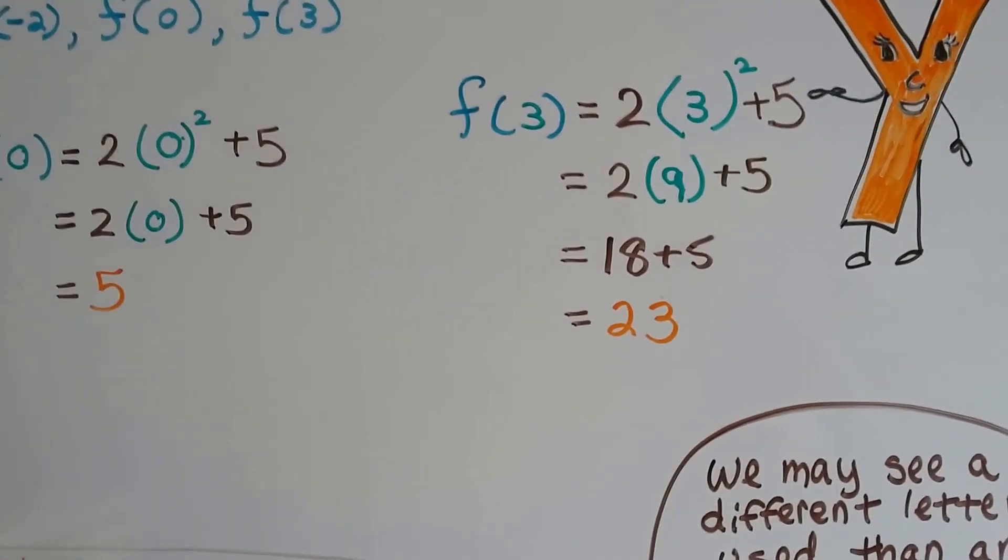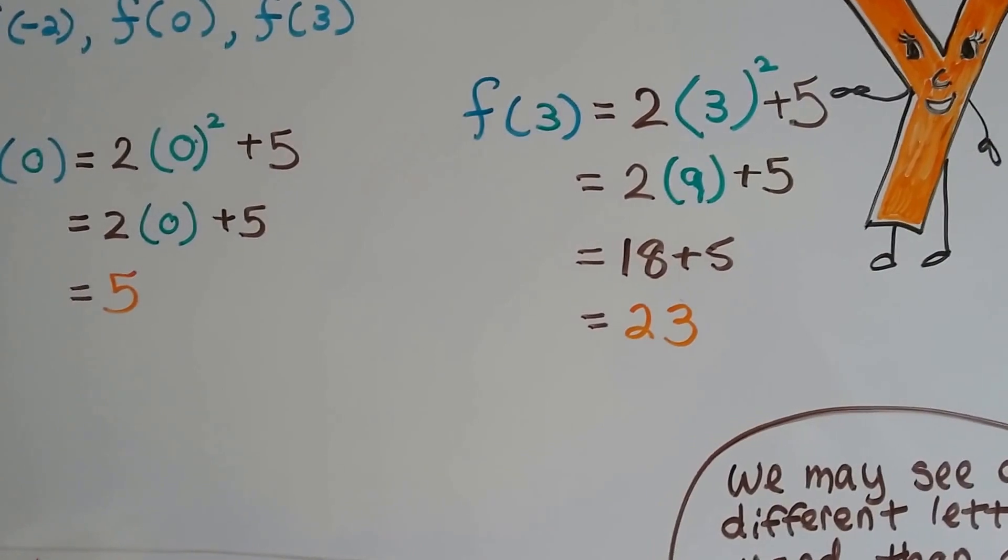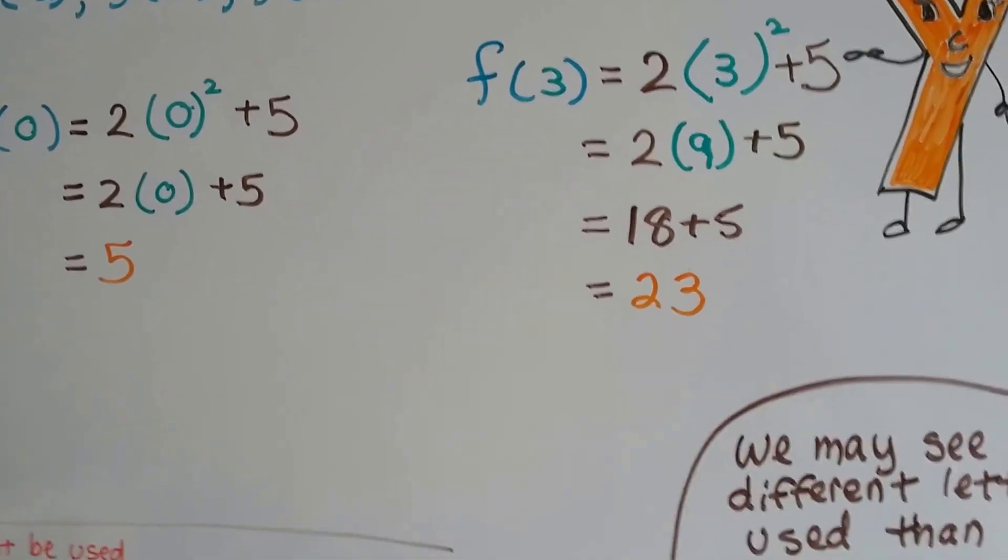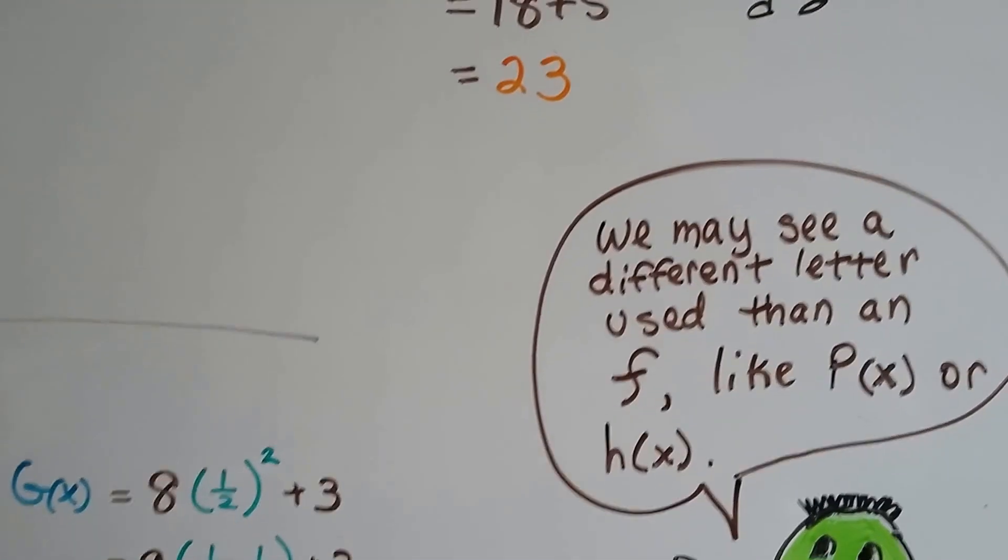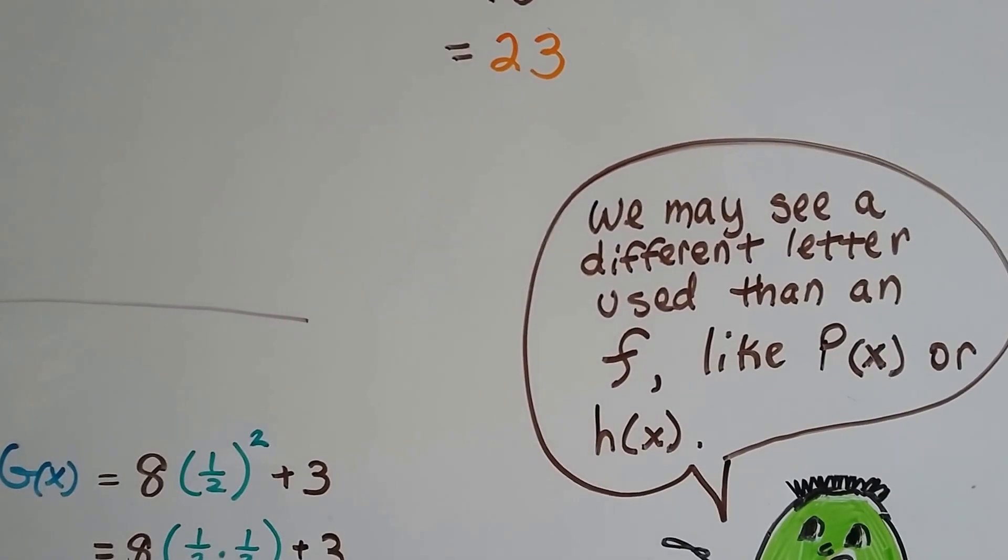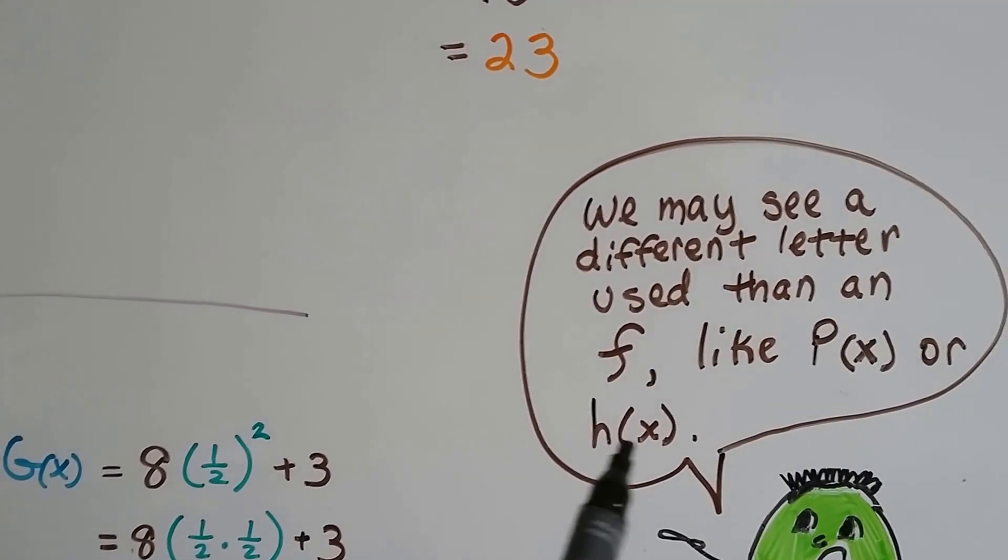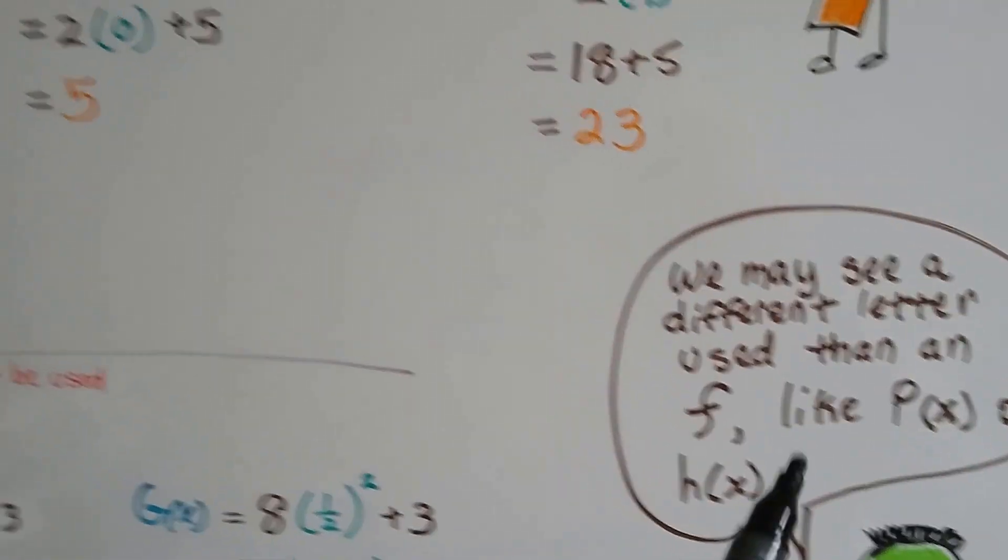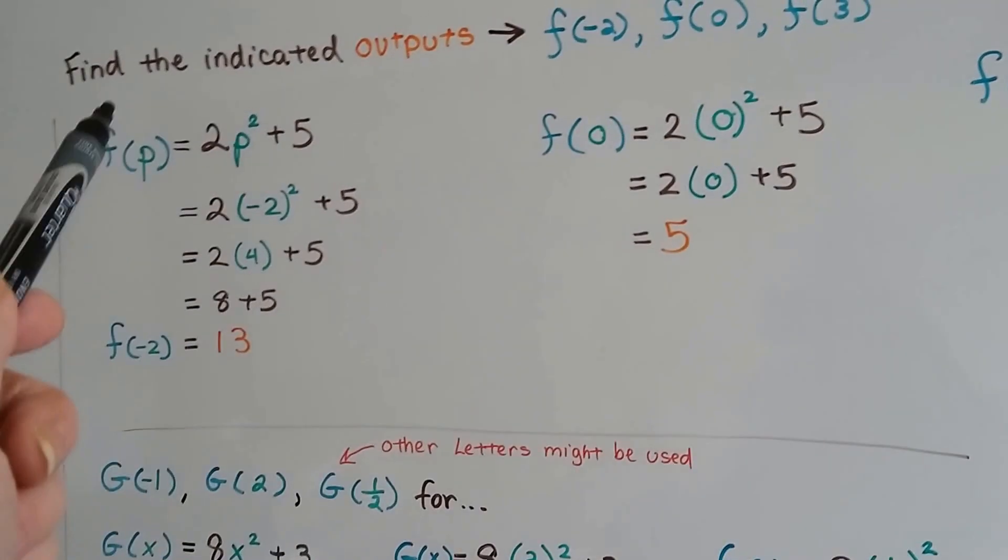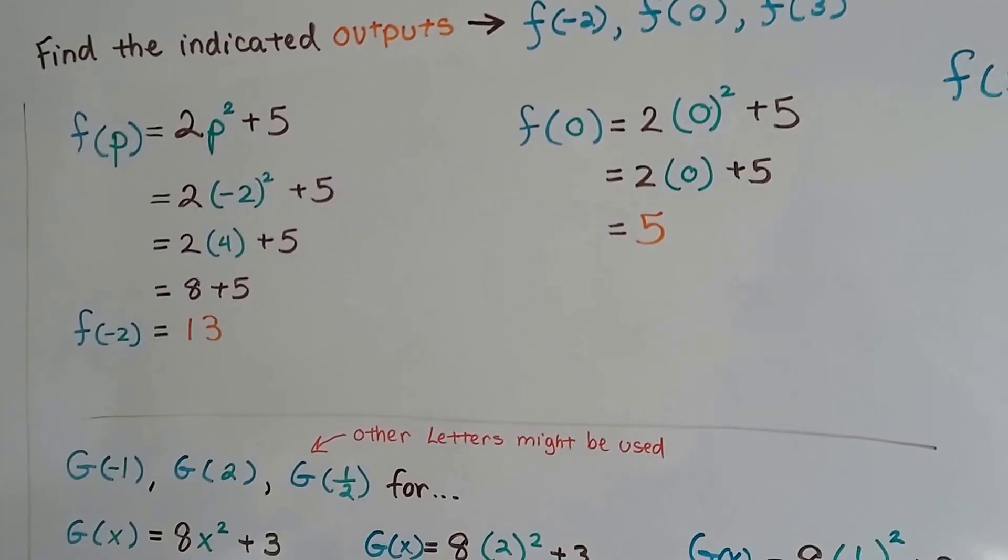If it's a 3, 3 squared is a 9, 2 times 9 is 18, 18 plus 5 is 23. And we may see different letters used than an f, like a p in front of parentheses with an x, or an h with an x in parentheses, or we might even see the f with another letter here. So other letters might be used.